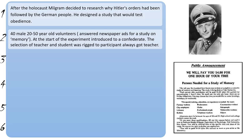At the start of the experiment the participant was introduced to a confederate. A confederate is a participant who is actually known to the experimenter and is going to be used to deceive the true participant.